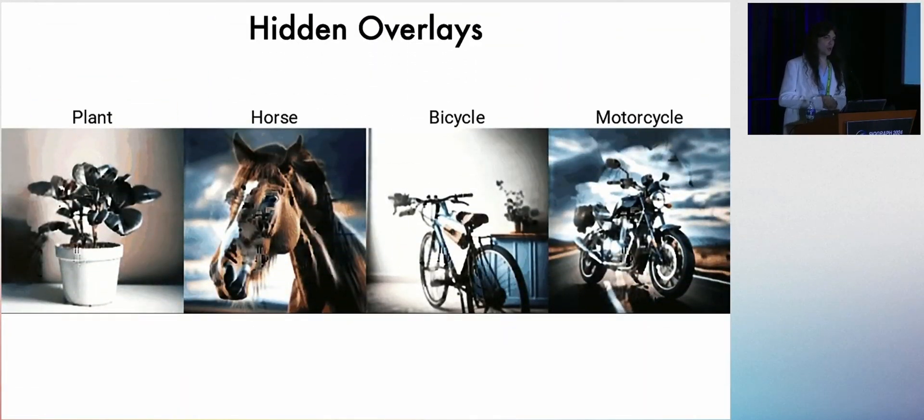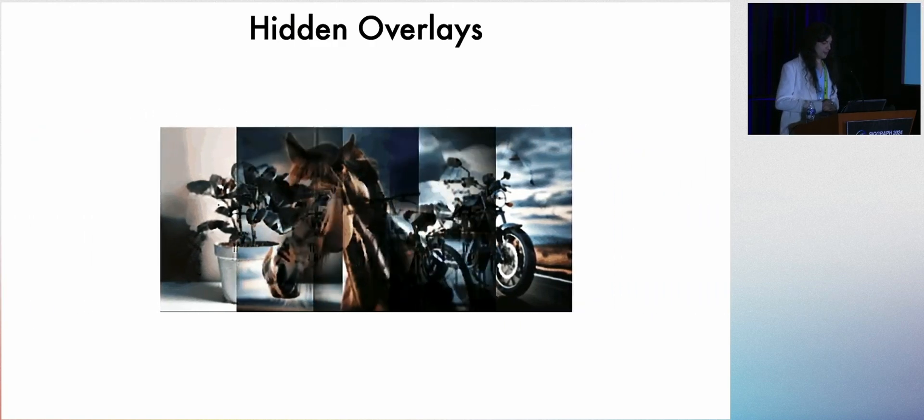And we also have transparent overlay illusions, pieces of plastic that has some ink printed on them. Something very suspicious about these four pictures is that when you put them together, you get a picture of a cat.